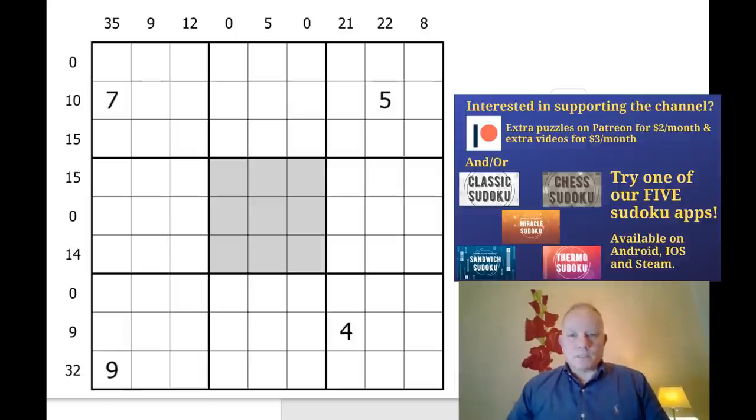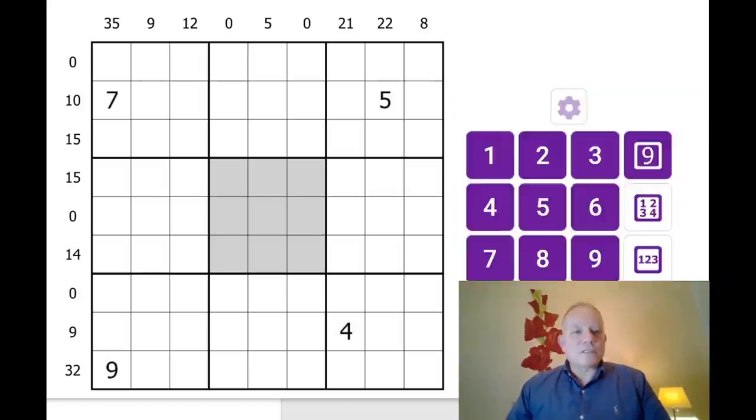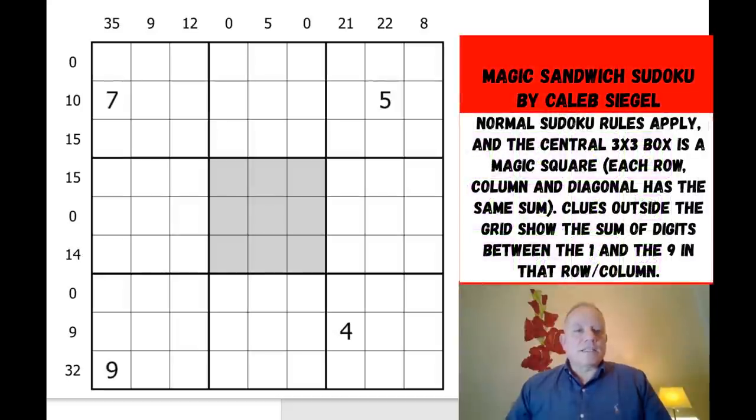Now this puzzle came to us with an email. Dear Simon and Mark, my name is Caleb Siegel. Here is my first ever variant Sudoku. It's a sandwich Sudoku and the middle box is a magic square. No twists. Hope you enjoy it. P.S. I'm eight years old. Sincerely Caleb.